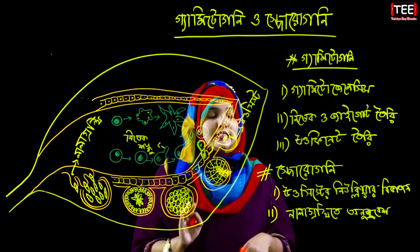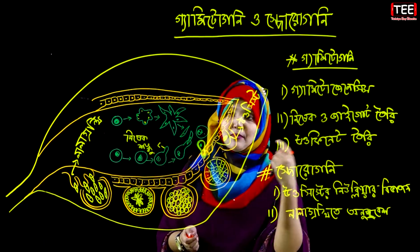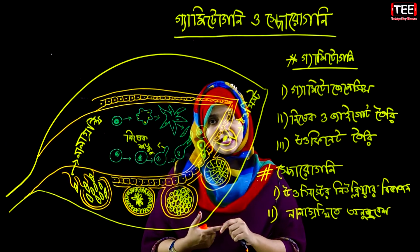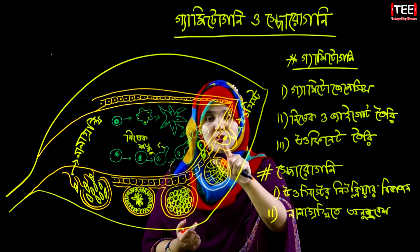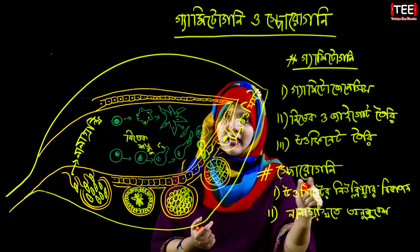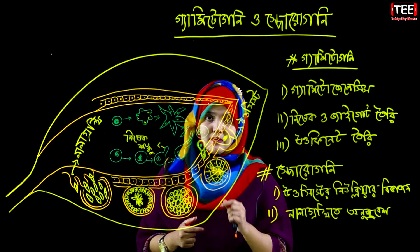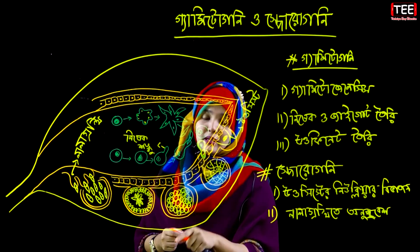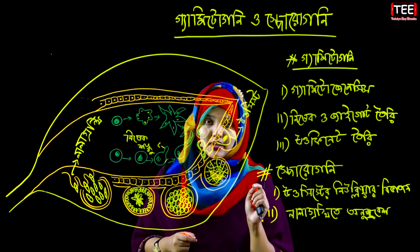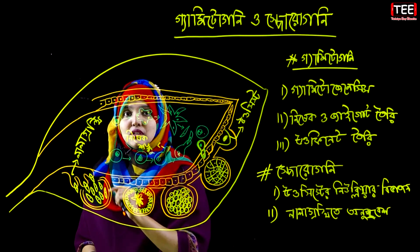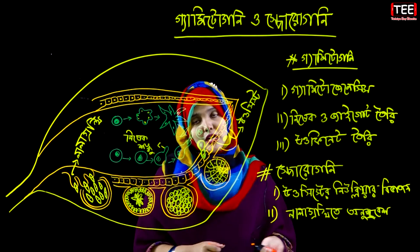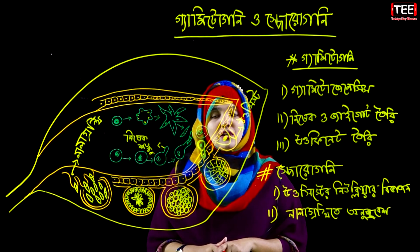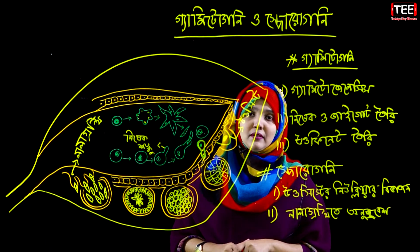Through gametogenesis we obtained male and female gametes. Then the next step is zygote formation. From the zygote, the motile ookinete is formed, and sporogony begins with nuclear division. Thank you so much for joining us today.